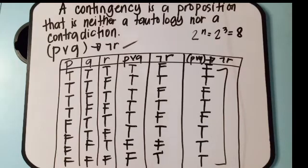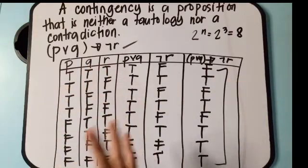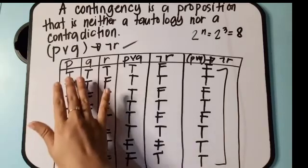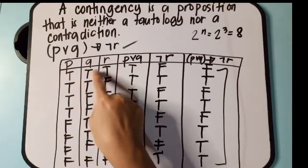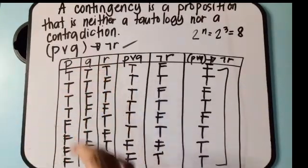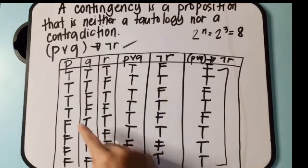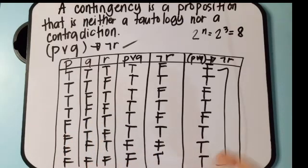I hope you now know how to differentiate tautology, contradiction, and contingency. Also, a reminder: the 8 rows in the truth table don't need to be in a specific arrangement — you can rearrange them as long as all 8 combinations are complete and no combination is repeated.